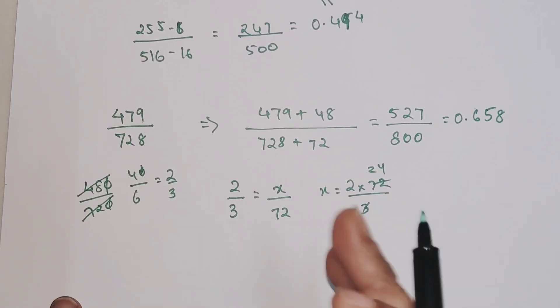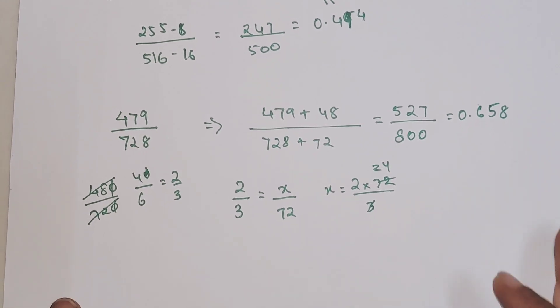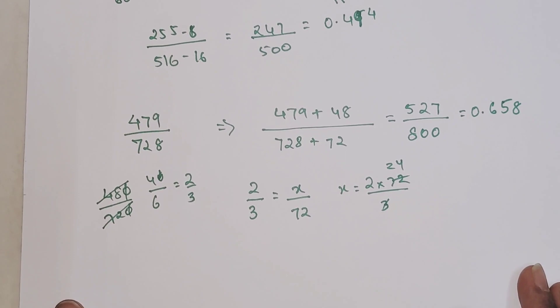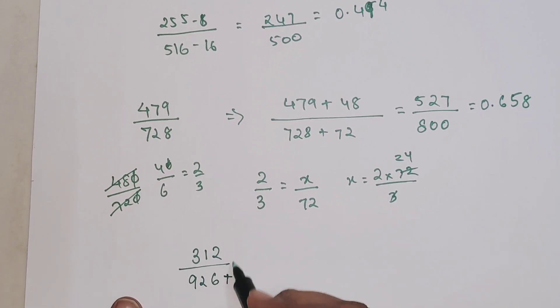Now very quickly, let's see if there was a 1/3 fraction and in case the value of x is coming out to be in decimal. Let's say we have 312/926.